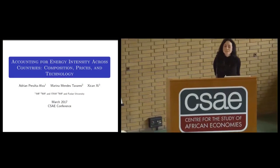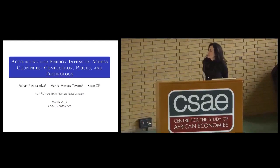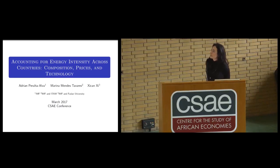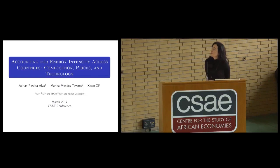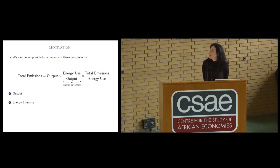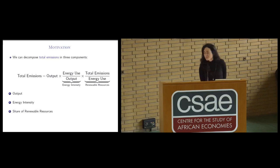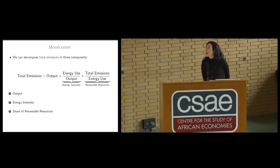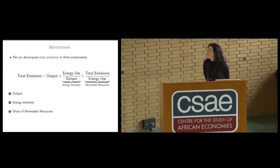Thank you. Now we are going to shift gears, but still touch on structural transformation and the composition of the economy — this time talking about climate. Here is a very simple decomposition to make the paper's main point. We can decompose emissions between output, energy use divided by output (which we call energy intensity), and total emissions by energy use. Since we want countries to grow, we focus on reducing energy intensity — improving how much energy is used to produce output. This paper is focused on energy intensity.